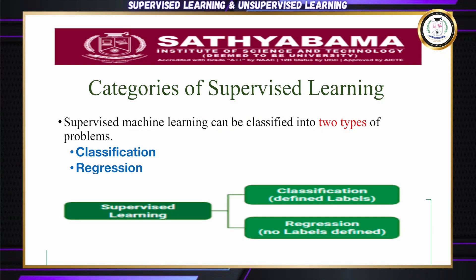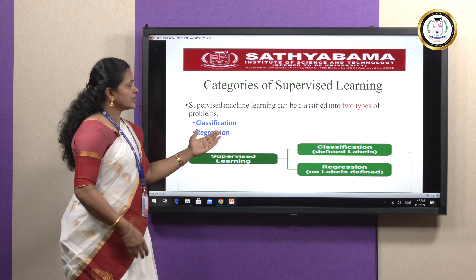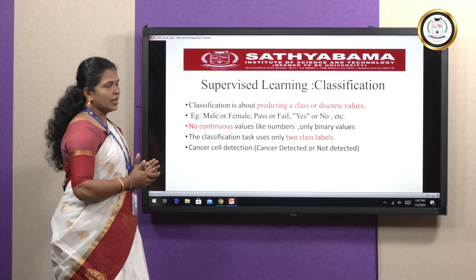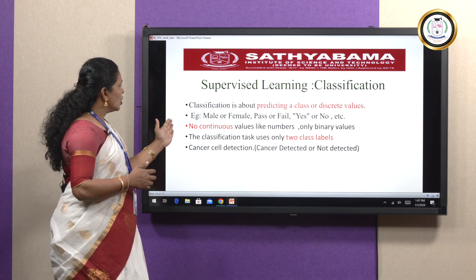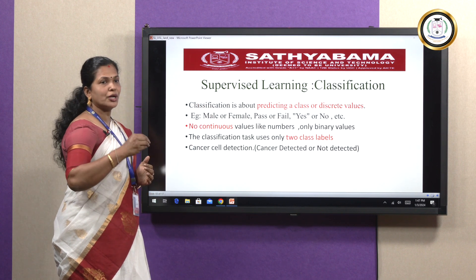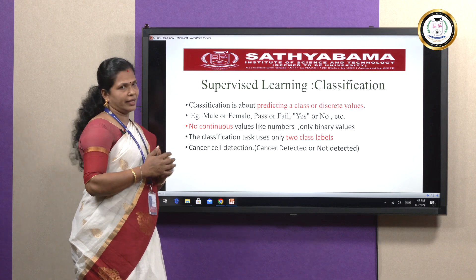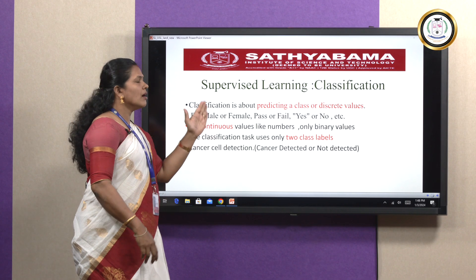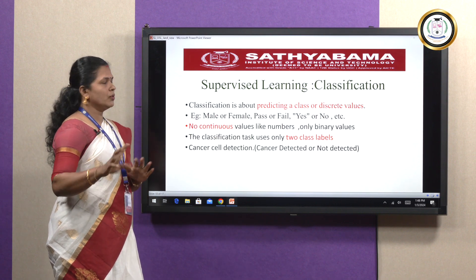Categories of supervised learning: supervised learning can be classified into two types — classification and regression. Classification uses defined labels and is about predicting a class or discrete values. Examples include male or female, pass or fail, yes or no. There are no continuous values, only binary values — 0 or 1. For example, in cancer cell detection, the output is either cancer detected or not detected.